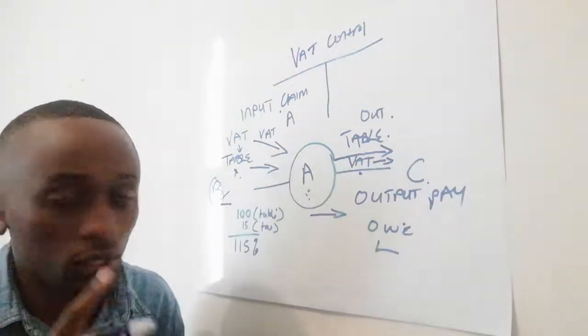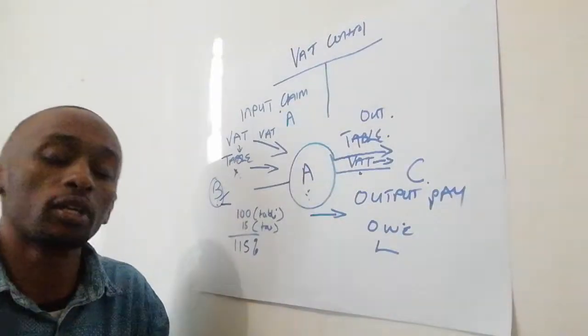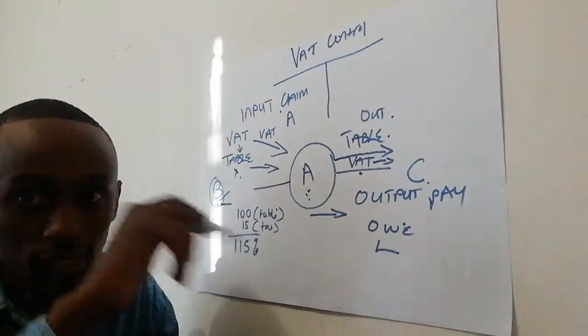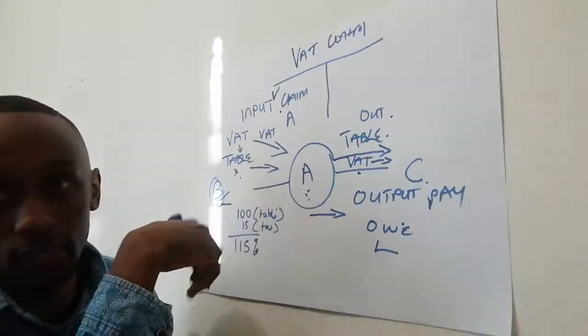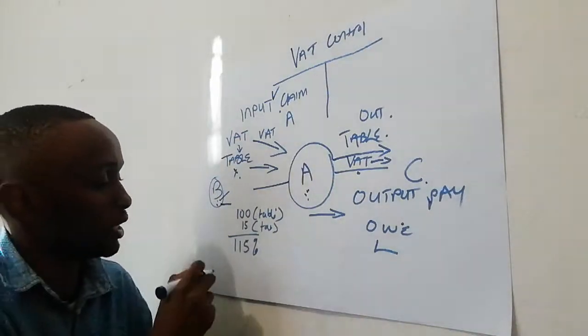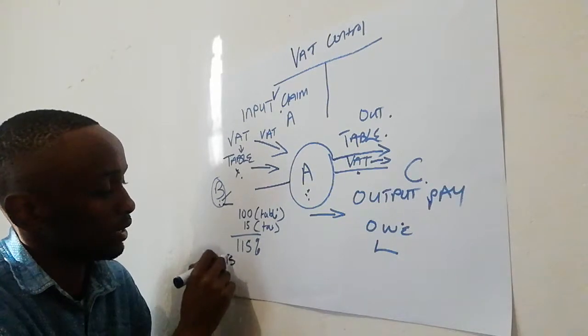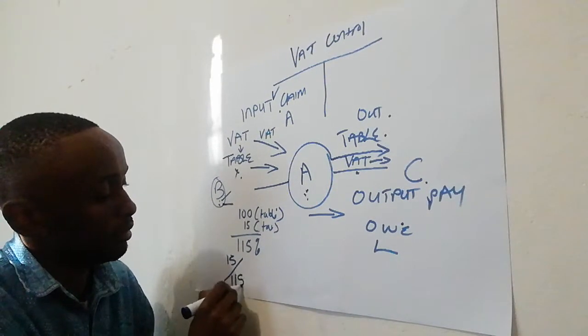When you're looking for the amount you are supposed to claim, this is how you do the calculation for input VAT. When you have an amount that already includes VAT and you want to calculate the input VAT, you have to say 15 over 115.